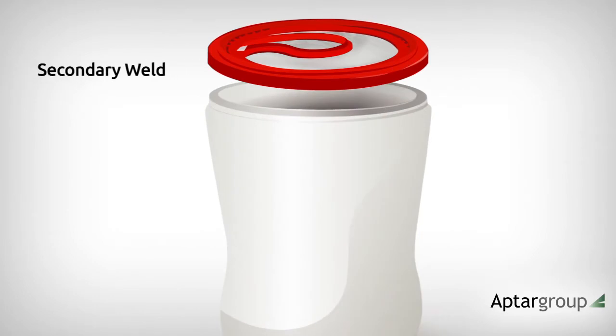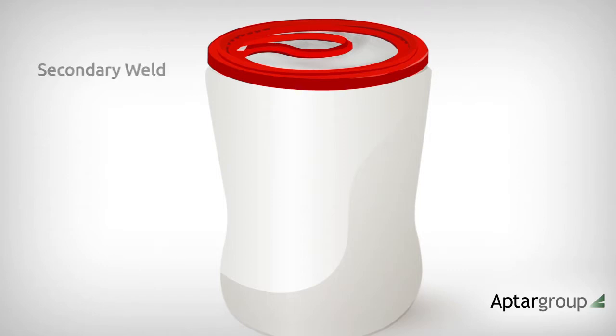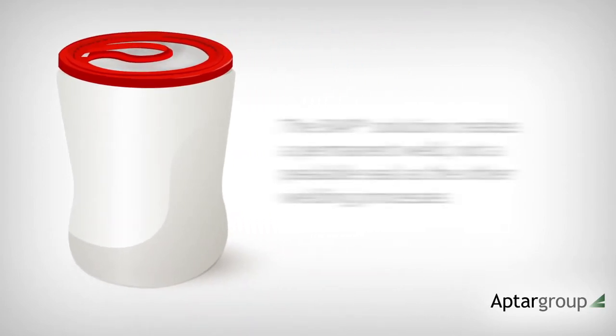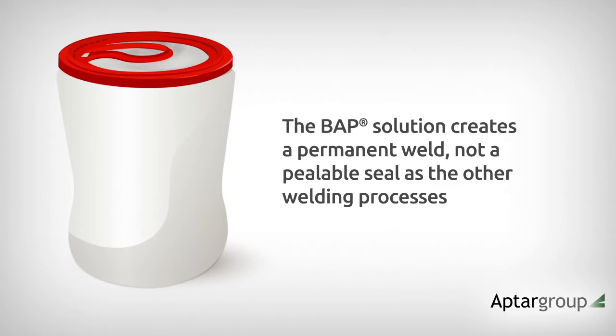The secondary weld is between the base with a welded foil and the container. This weld occurs at the customer's facility after the container has been filled. Therefore, the BAP solution creates a permanent weld, not a peelable seal as the other welding processes.